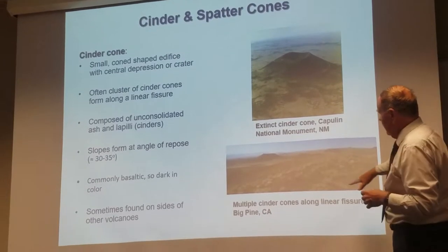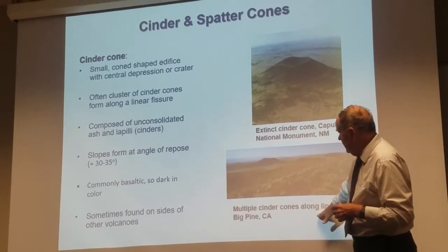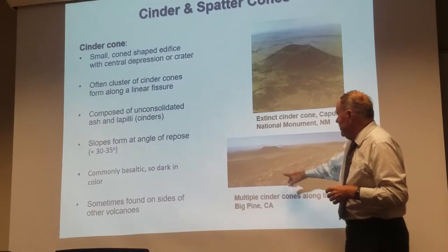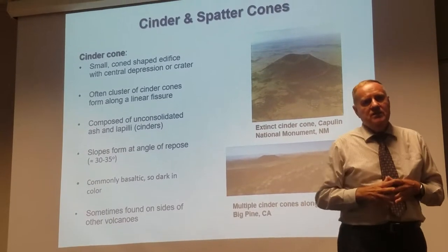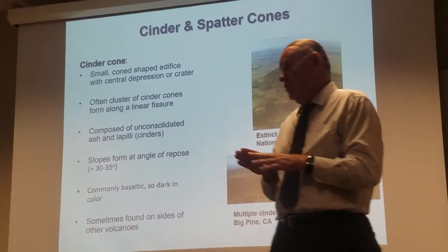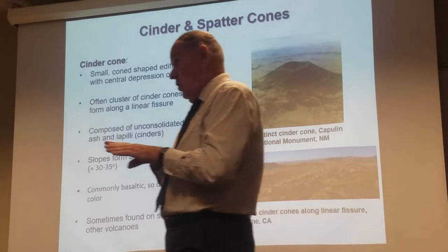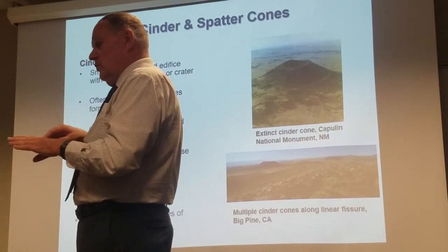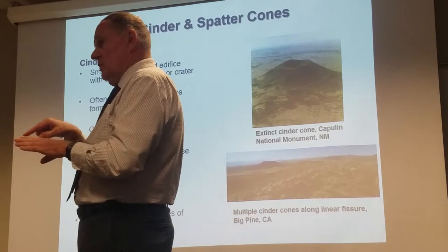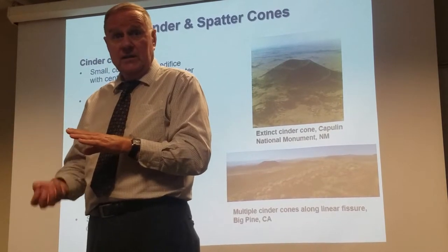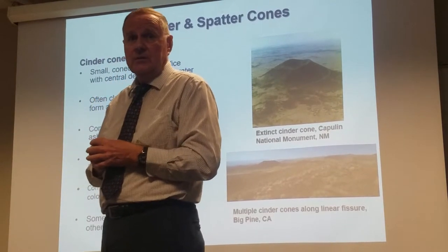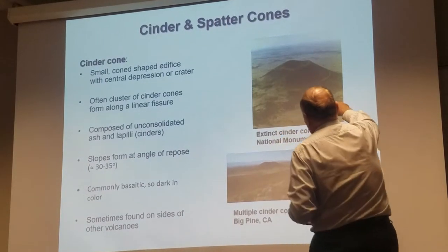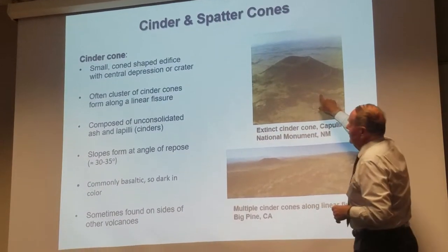Here's a picture from Big Pine, California — this is in the southern end of the Owens Valley, part of the Basin and Range province. Remember, the Basin and Range is where the Earth is actually splitting apart; North America is splitting there. Sometimes you get little fissures that open up where the asthenosphere comes up and erupts. And here's a great picture of the Capulin National Monument in New Mexico.